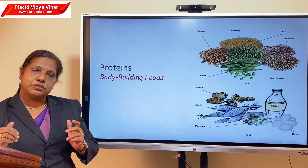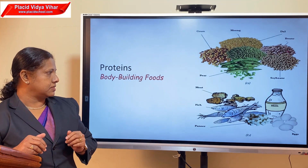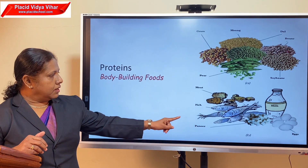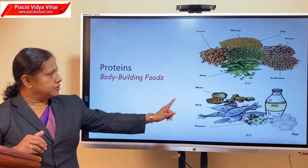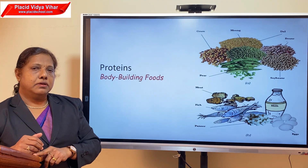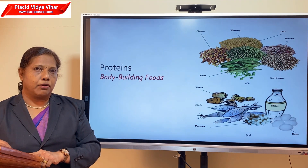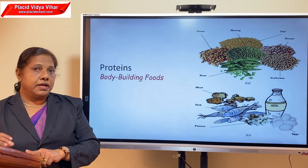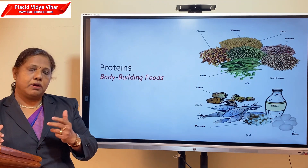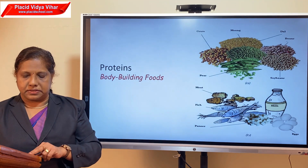We also get protein from animal sources like meat, fish, egg, milk, and paneer. In order to help in the growth of your body, you have to take a lot of protein-rich foods.